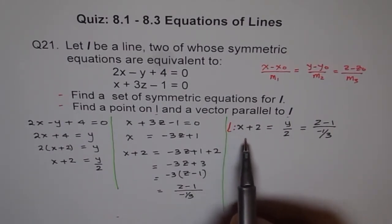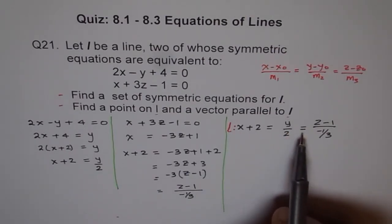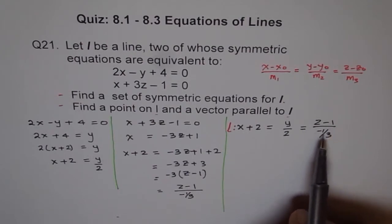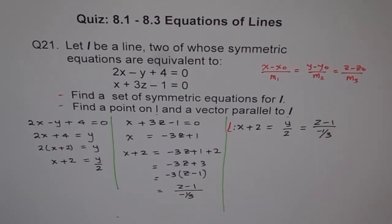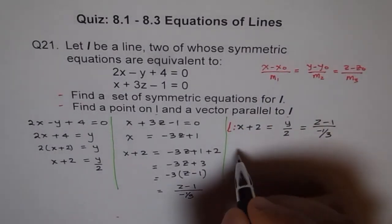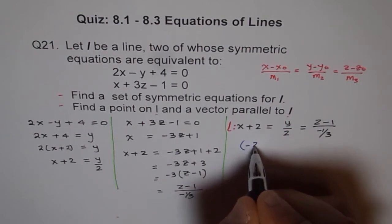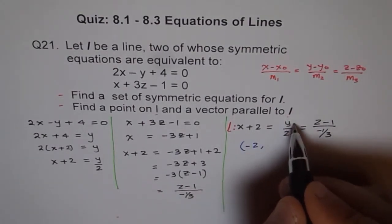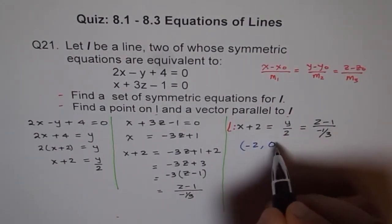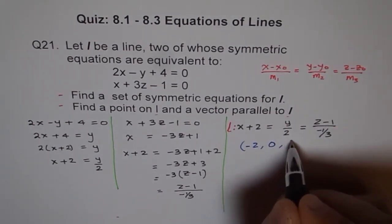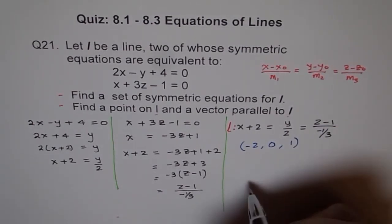The equation of the line is x plus 2 equals y over 2 equals z minus 1 divided by minus 1 over 3. Now, from here, you can write down set of points. What could be a set of point on this? Let's compare it. Minus 2 for x. Minus 2 for x and y should be minus 0, so 0, and this is 1. That is the set of point. Let's say this is the point P on our line L.